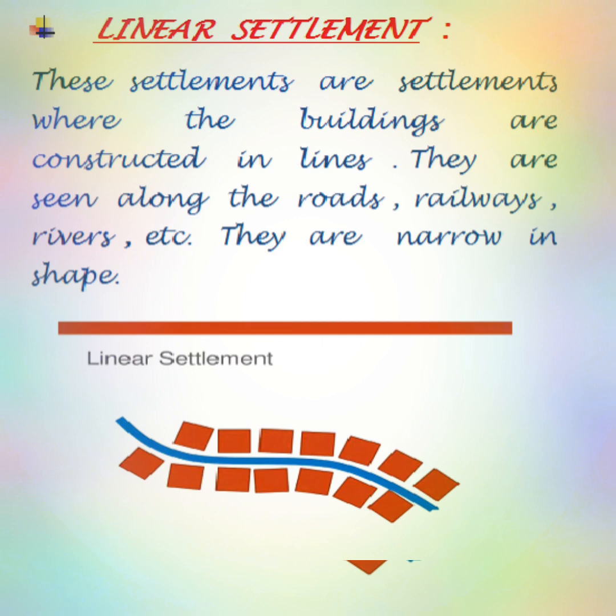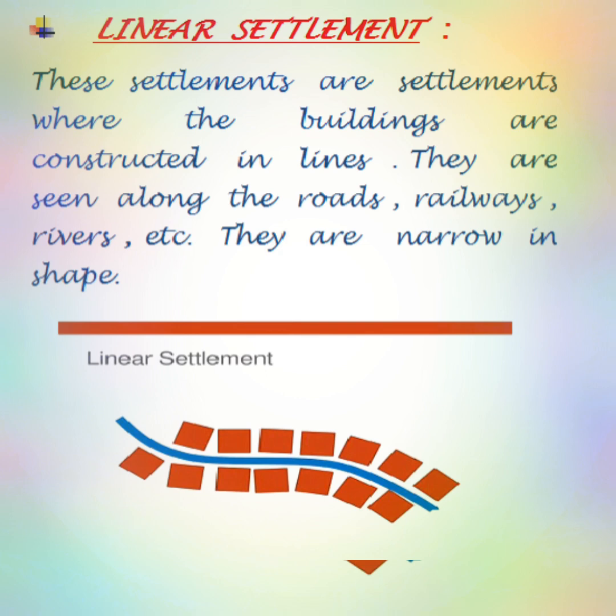The first one is linear settlements. These are settlements where buildings are constructed in lines. This type of settlement is seen along roads, railways, rivers, sea coasts, and in foothill regions. These settlements are narrow in shape and spread along a straight line.